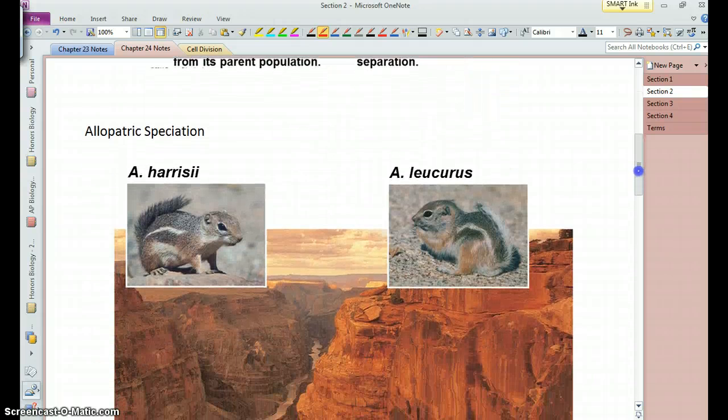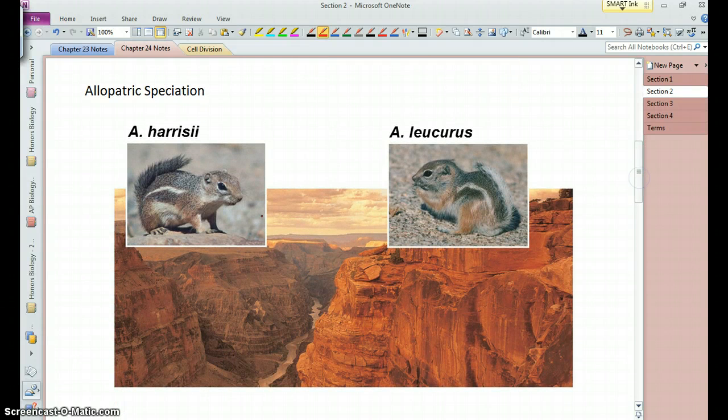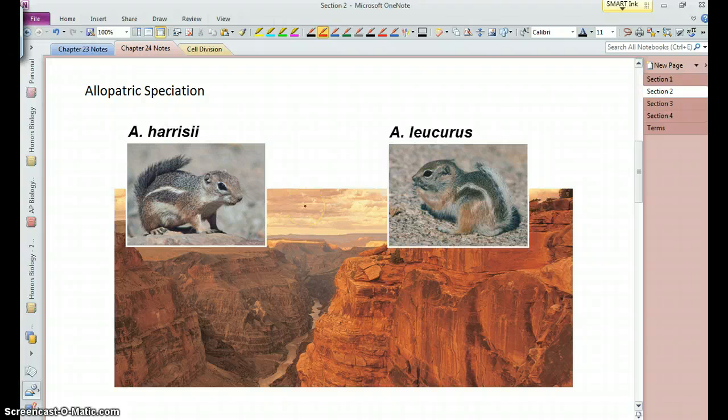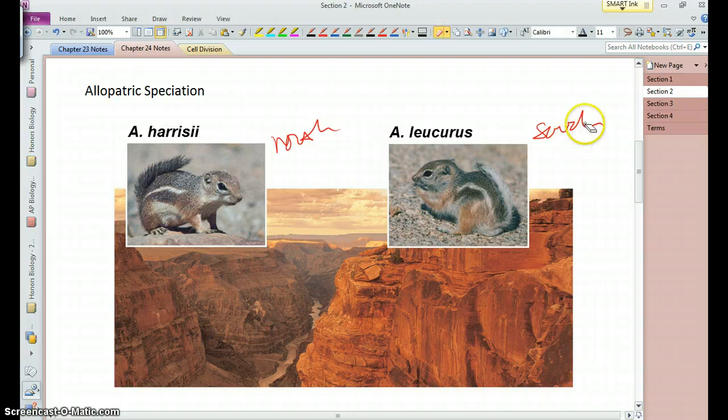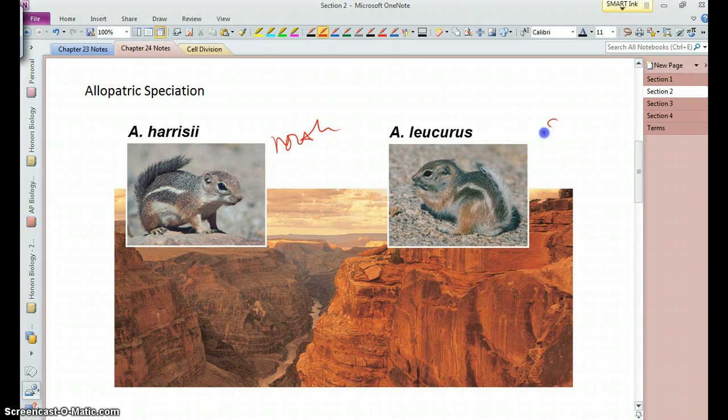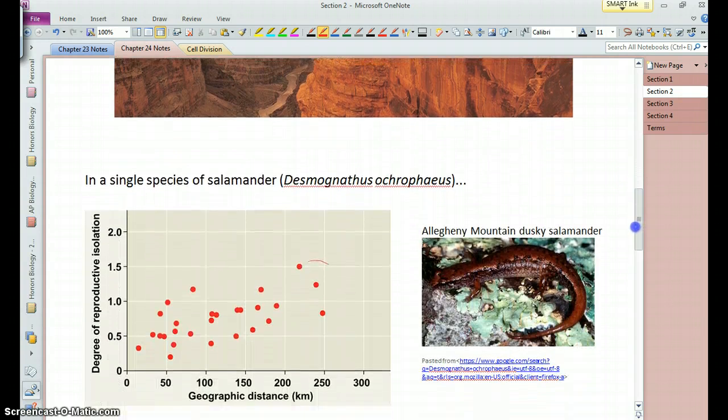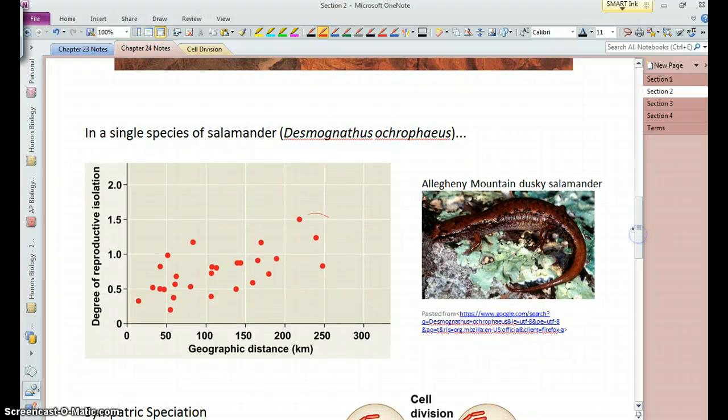So here is what we think is a good example of allopatric, these ground squirrels that one inhabits the north side of the Grand Canyon, or the, not the canyon itself, but the north rim and then the south rim of the Grand Canyon. And so they clearly are geographically isolated from each other, they've taken different evolutionary pathways and are considered separate species.